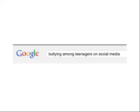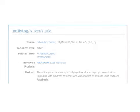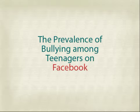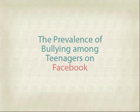If we were searching Google, we might search the whole topic at once: bullying among teenagers on social media. But searching a database of articles is different. Typically, each word you search has to exactly match the words in the article title, very brief summary, and a few keywords or subject terms. If, for example, Facebook is used instead of social media, the article won't be retrieved.